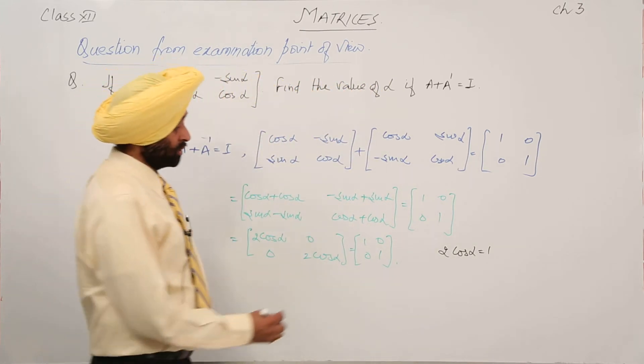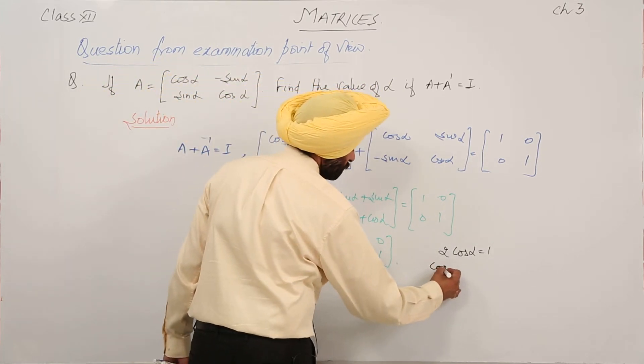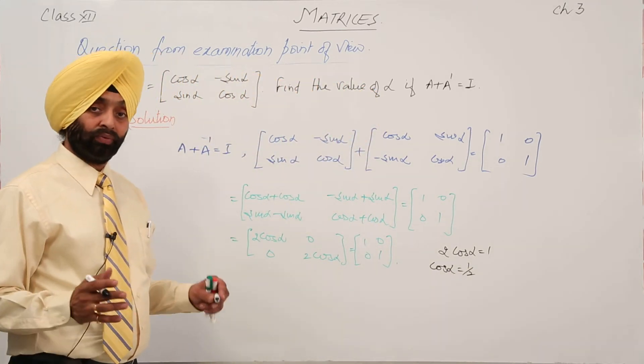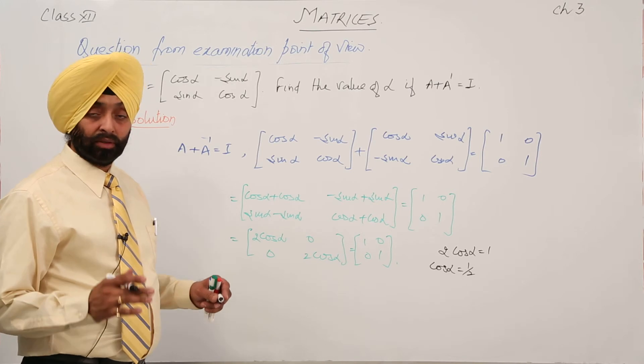cos alpha equals 1 by 2. Now, 1 by 2 for cosine is 60 degrees.